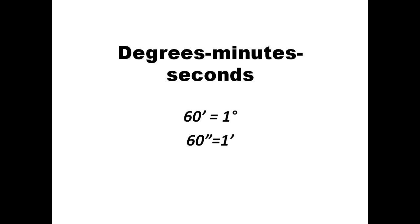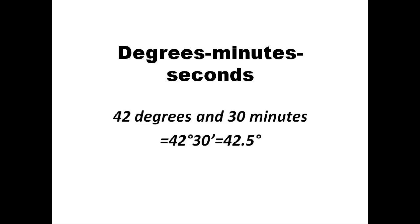Let's take a look at a couple of simple conversions that you can probably do in your head. 42 degrees and 30 minutes would be equal to 42.5 degrees, since 30 minutes is 0.5, or one-half of a degree. Similarly, 54 degrees and 15 minutes equals 54.25 degrees. We've just been dividing the number of minutes by 60 to do the calculation.